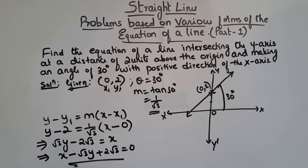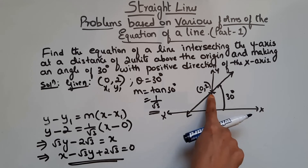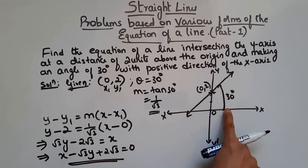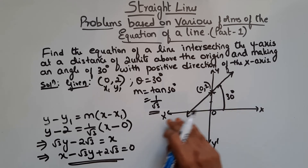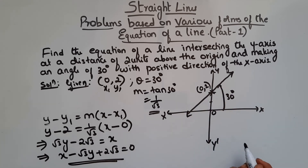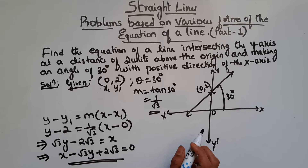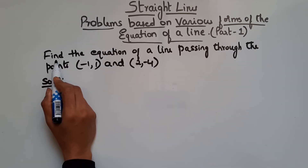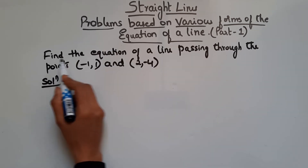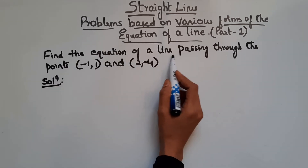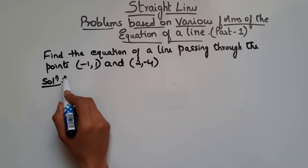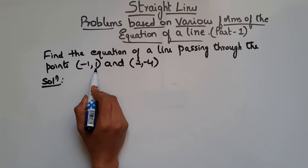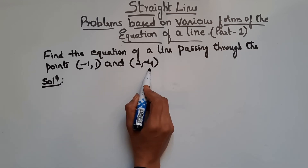This is the equation of a line that passes through (0, 2), making an angle of 30 degrees along the x-axis. Now let's see the next problem: find the equation of a line passing through the points (-1, 1) and (2, -4).